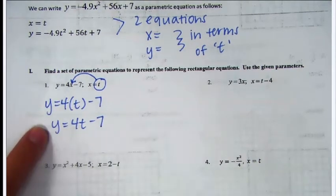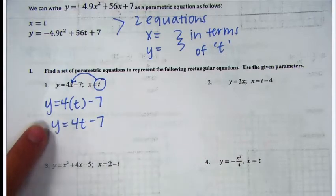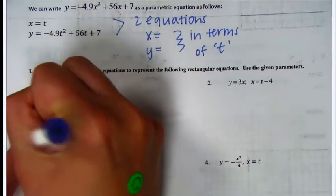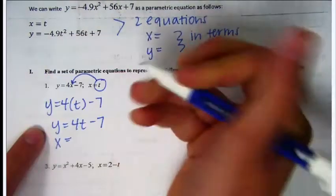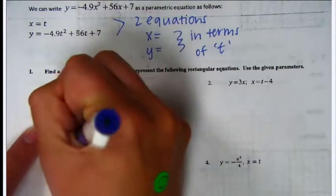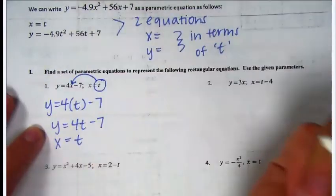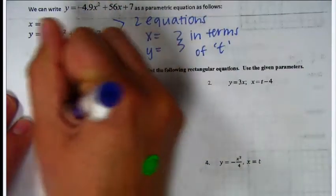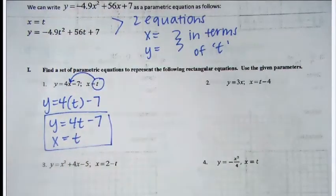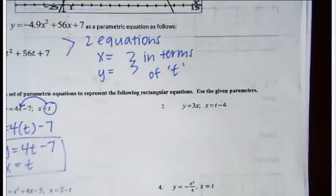Remember, you have to have two equations — an x and a y. Here's our y, and our x was given to us: x equals t.